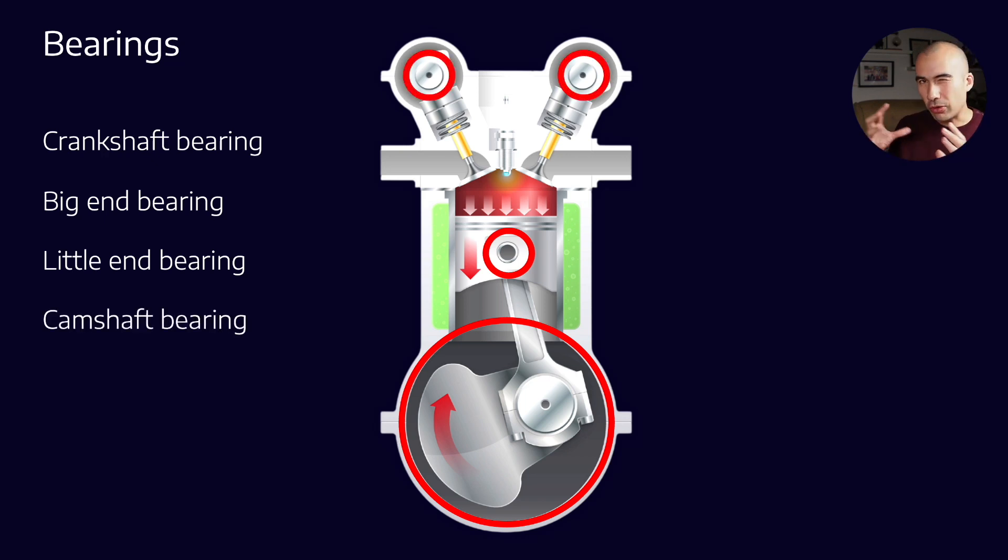The camshaft generally has a plain bearing, but it's a slightly different environment to the crankshaft, so we're talking about a slightly different lubricating environment. The other thing is that there are other bearings—the definition of bearing is really just a mechanism which allows relative motion of two machine surfaces.